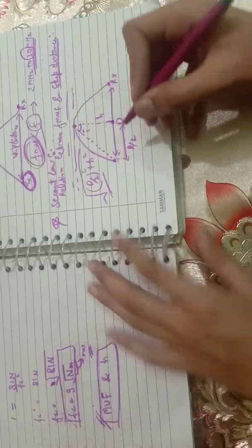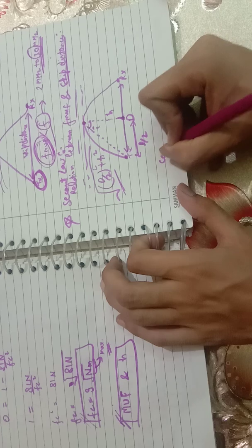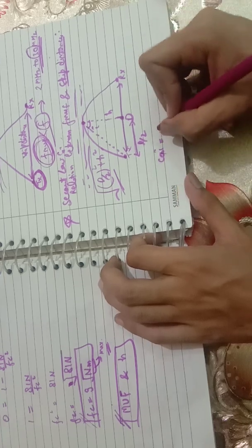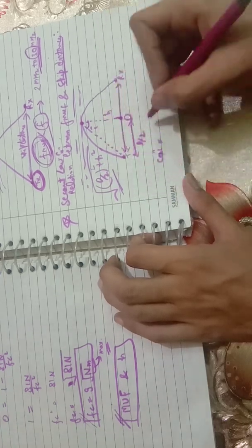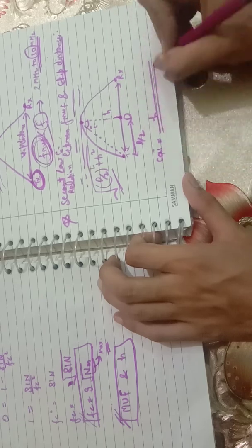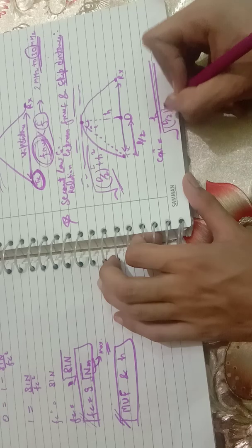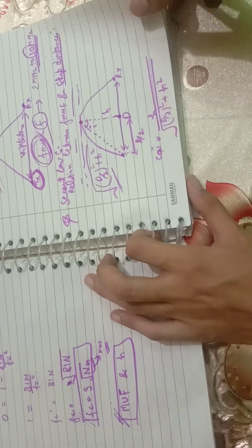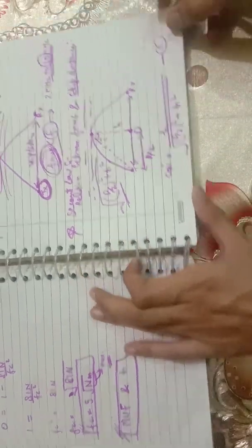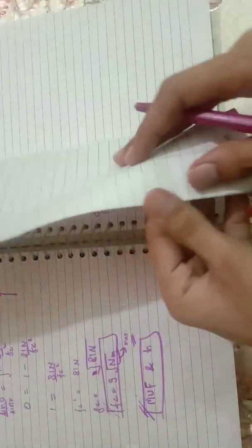Now I am taking the angle of incidence i, and cos(i) equals the base over hypotenuse, which gives us h divided by the square root of (d/2)² + h². This is our first equation.